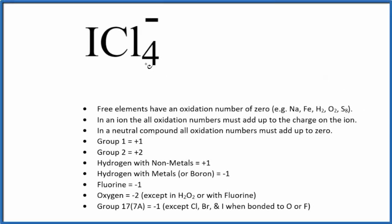Let's find the oxidation number for each element in ICl4 minus. First, we note this negative sign means this is an ion. In an ion, all the oxidation numbers add up to the charge on the ion. So all of the oxidation numbers here are going to add up to minus one.